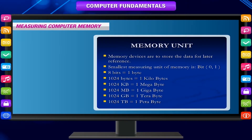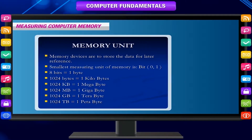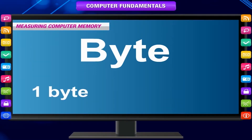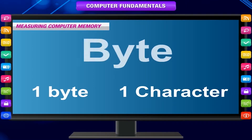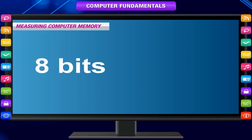Computer memory is measured in terms of bytes. One byte is capable of holding one character. Each piece of information is represented within the computer's memory using binary digits 0 and 1. A combination of 8 bits makes a byte.